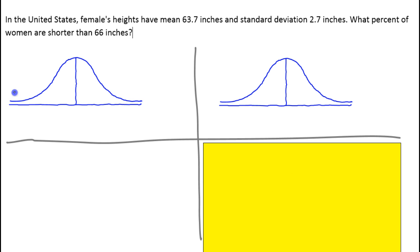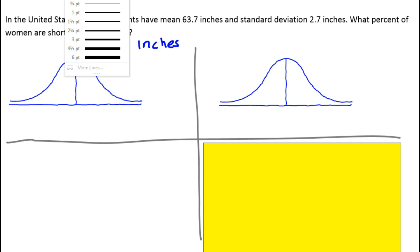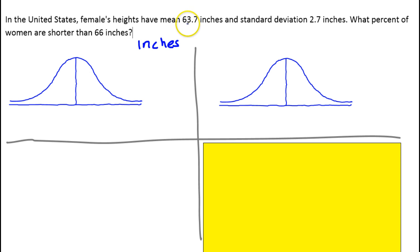On this normal distribution or bell curve, the line right down the middle represents the mean. On the left side, we'll go ahead and do inches. The mean is 63.7 inches, so that should go right here.